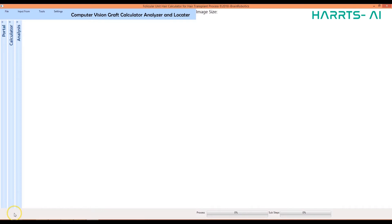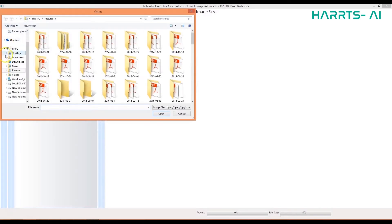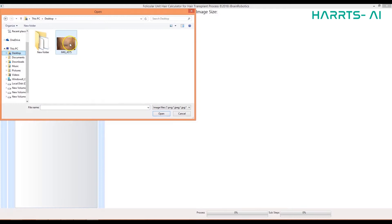Three steps in the HEARTS AI Graft Calculator: the portal, the calculator, and the analyzer. The portal: first, upload the donor area image into the portal. You can either upload an image from the system or use the system camera to get the image in the portal.